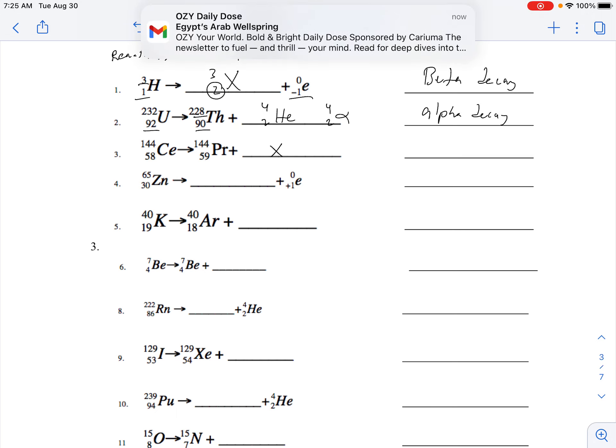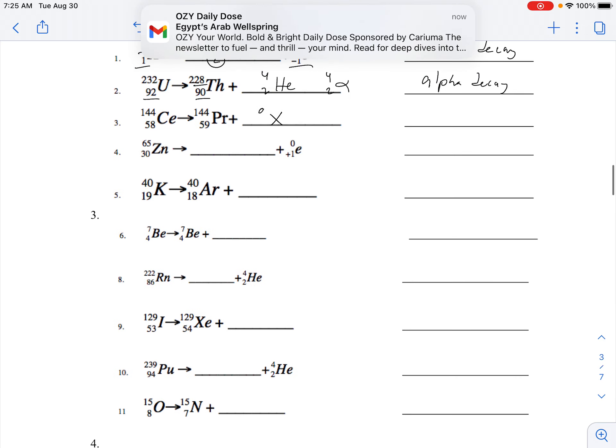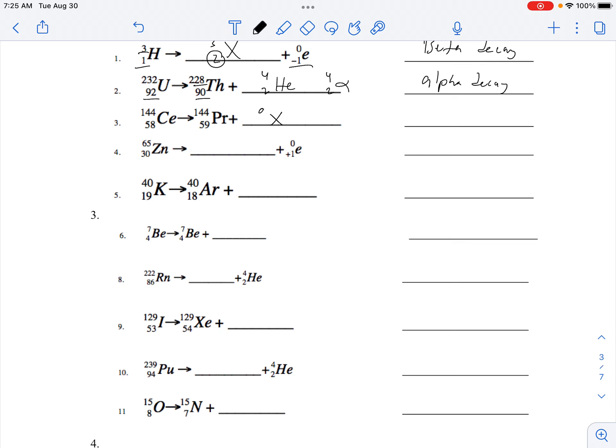The next one: zero and negative one. Negative one plus 59 gives you 58. This would be also an electron, so beta decay.